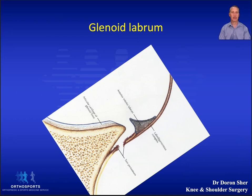The glenoid labrum itself is made up of dense fibrous tissue with very few elastic fibers. It deepens the glenoid and allows attachment of the glenohumeral ligaments. The labrum contributes enormously to glenohumeral stability and functions as a bumper.